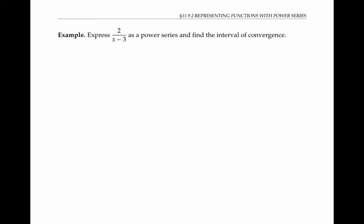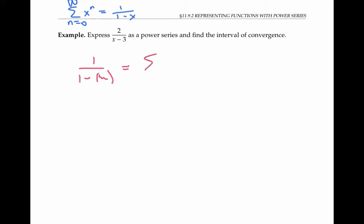We want to express the function two over x minus three as a power series, using the geometric sum formula. The trick is to rewrite two over x minus three so it looks more like one over one minus something. Then we can treat that something as x and plug into the formula to get a power series.